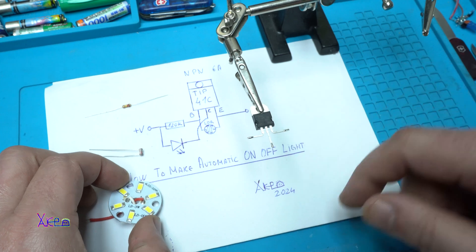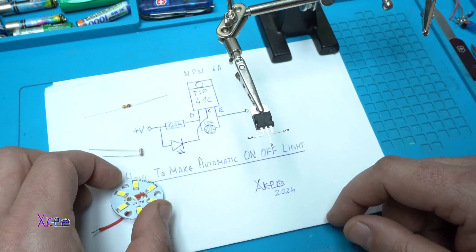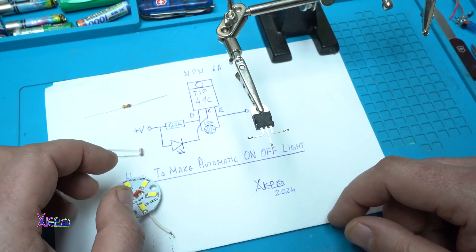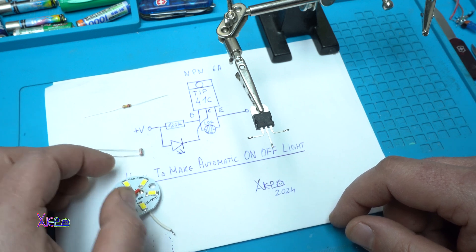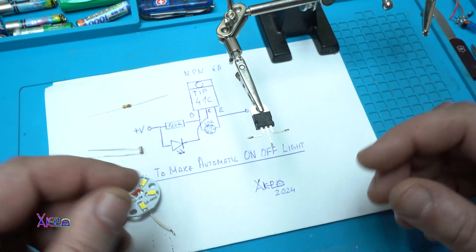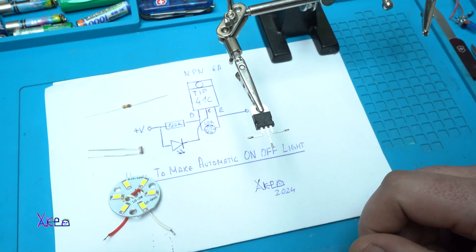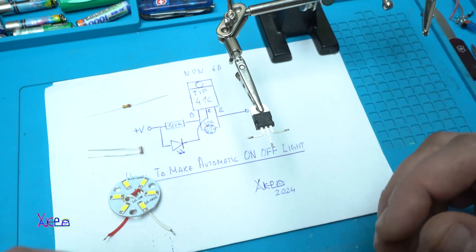So this circuit is for 12 volts, but you can run it from around 6 volts maximum to 20 or 24 volts. Let's now solder all the components.